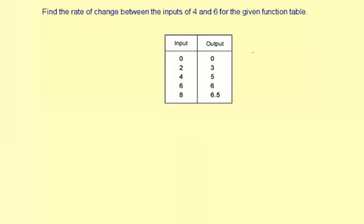Find the rate of change for the inputs of 4 and 6 for the given function table. So inputs 4 and 6, that's right here, increasing by 2.